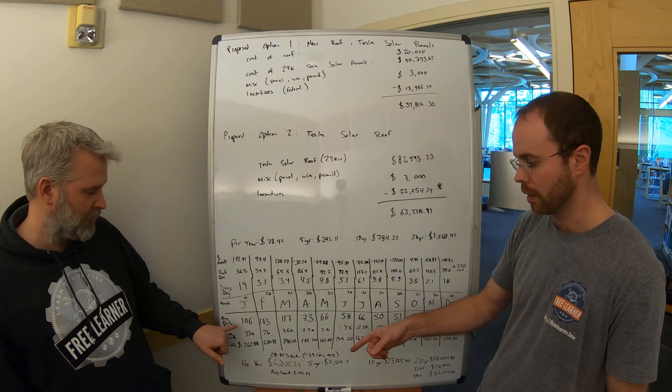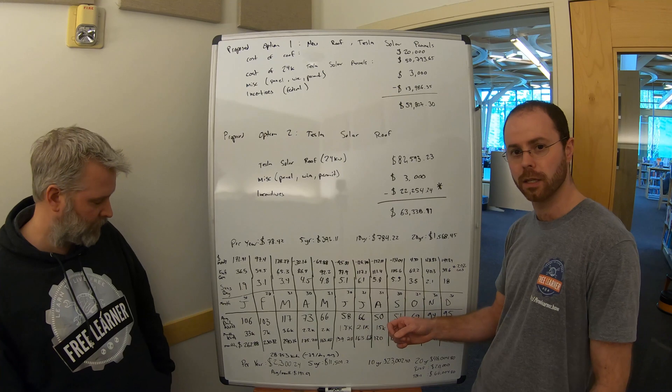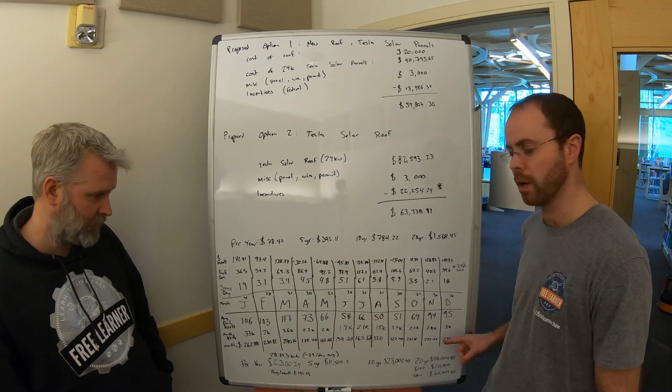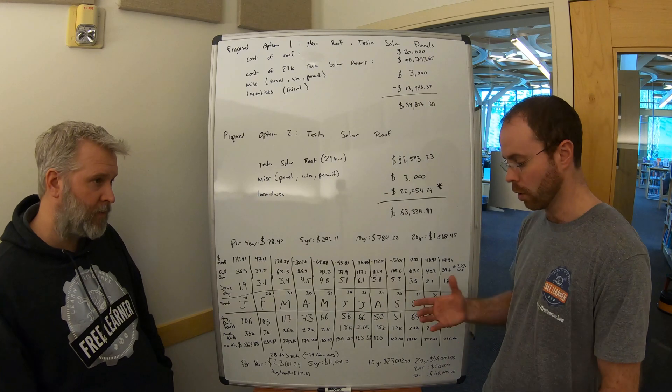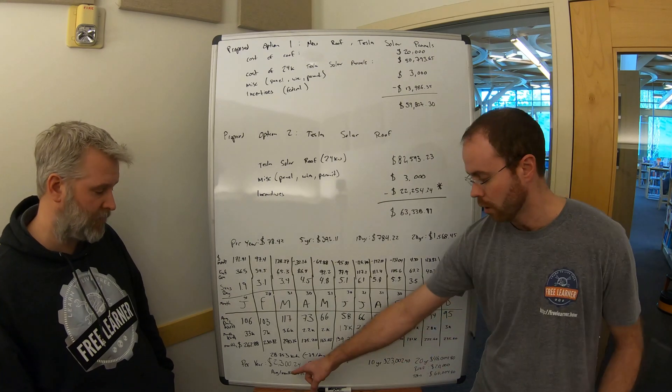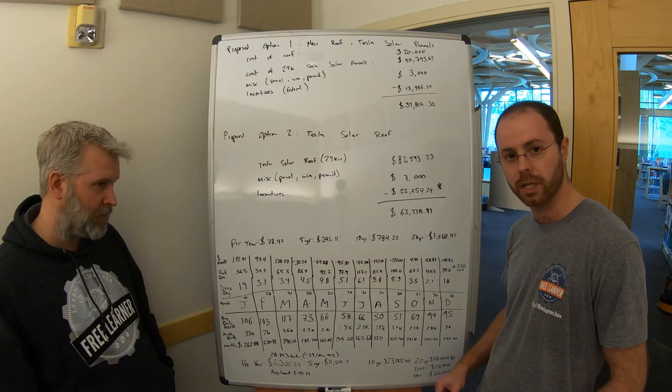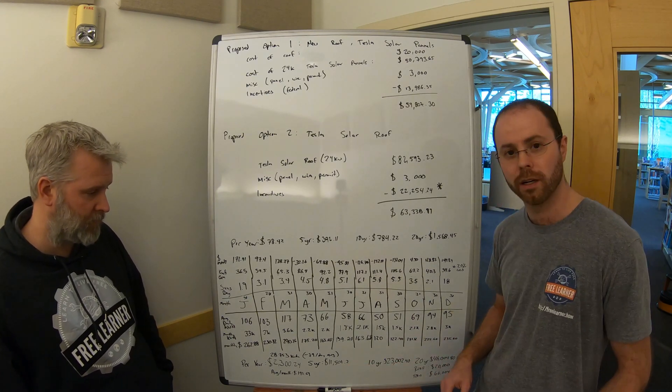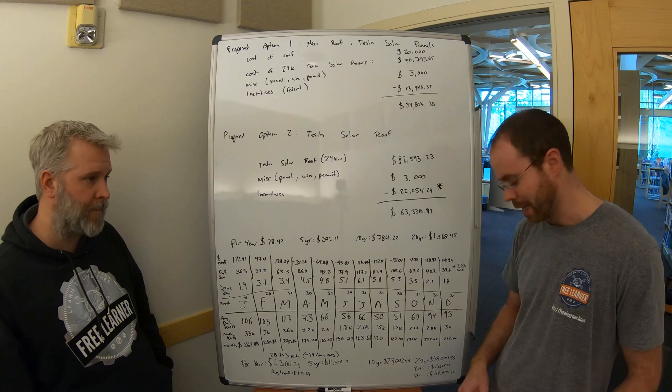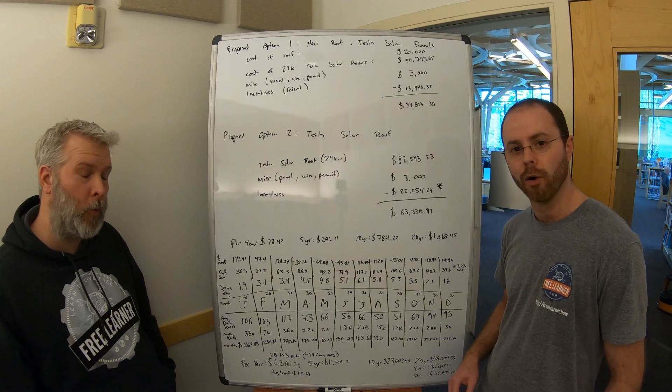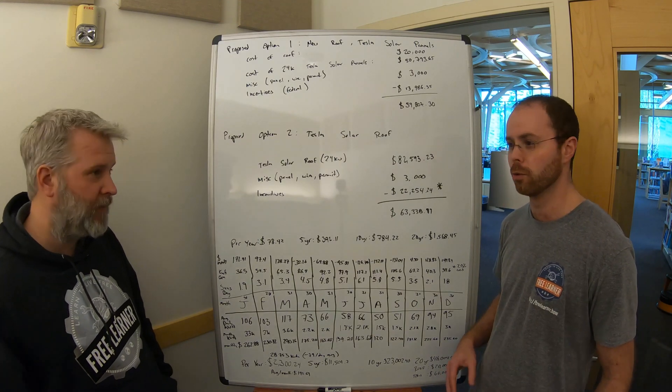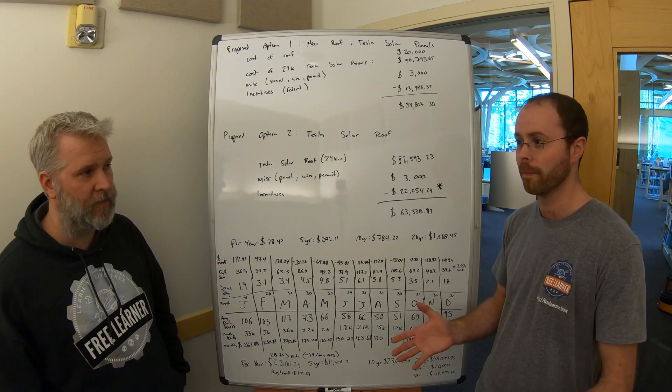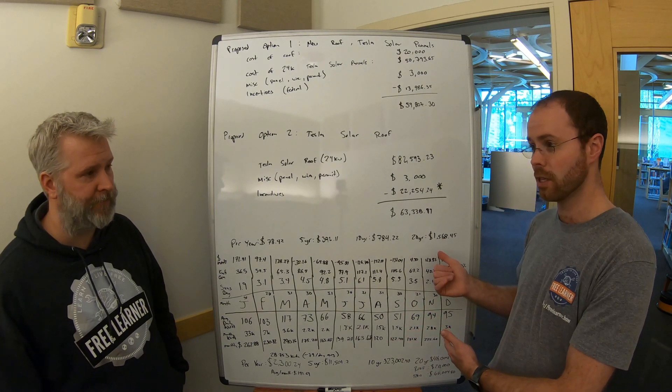Kilowatt hours consumed per day throughout the year. And if I extrapolate that out based on my $0.08 a kilowatt hour where I currently live, I can see what my current monthly cost is spread out across the entire year. Total cost of the year in electricity, $2,300.24. If I factor that out over a 5-year, 10-year, 20-year period, it equates to $46,000 over the course of 20 years in order to do electricity on my house, assuming the cost of electricity doesn't go up.